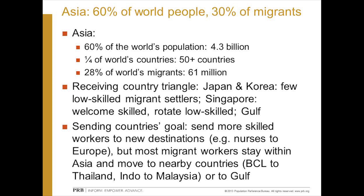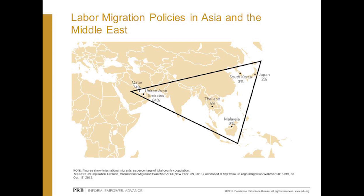Asia is the dynamic area that could be changing. With 60% of the world's people and about a quarter of the world's countries, it has only about 30% of the world's migrants. Asian receiving countries form a triangle: Japan and Korea have very few low-skilled migrants; Singapore has a policy of welcoming the skilled and rotating the low-skilled; and the Gulf oil exporters rely on migrants to fill almost all private sector jobs. Asia also has major sending countries like the Philippines, and most Asian migrants stay within Asia.